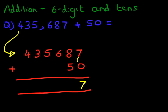The next column, the tens column, what is 8 plus 5? 8 plus 5. That's right. It is 13. So, we put 1 here and we put 3 here.